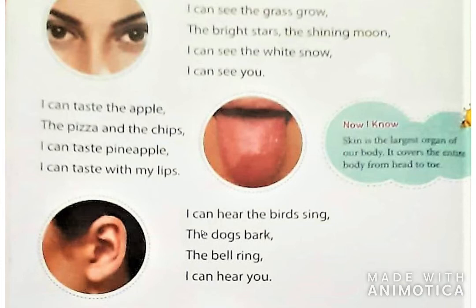Next is ear. I can hear the birds sing, the dog bark, the bell ring, I can hear you. अभी हम कौन से organ से सुन सकते हैं? Ear से। हम क्या कर सकते हैं — bird sing, dog bark करता है, bell ring — वो सुन सकते हैं। जो मैं आपको पढ़ा रही हूँ, आप कौन से organ से सुन रहे हो? आपके ears से।